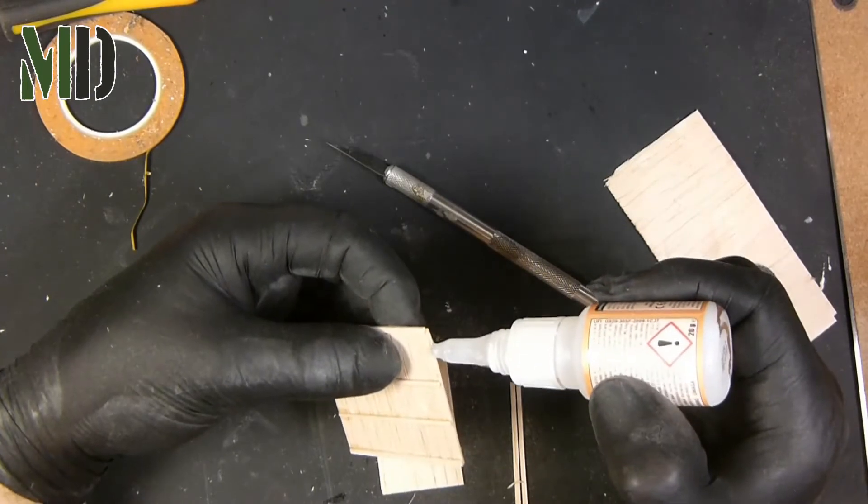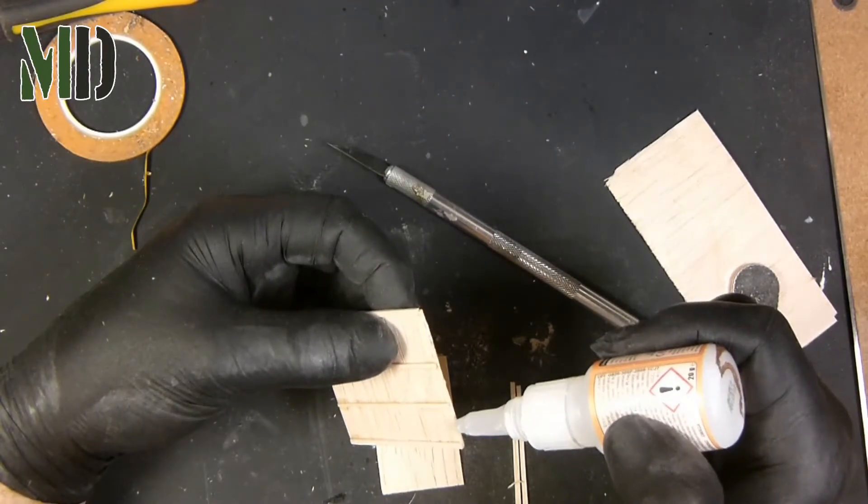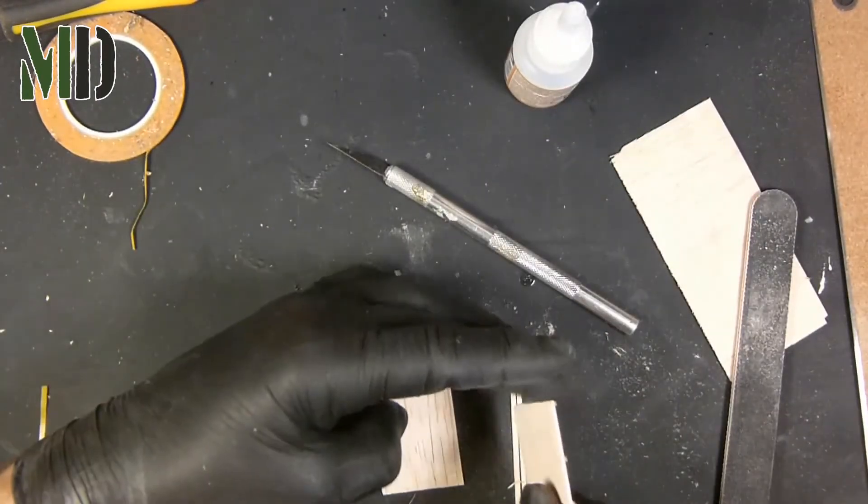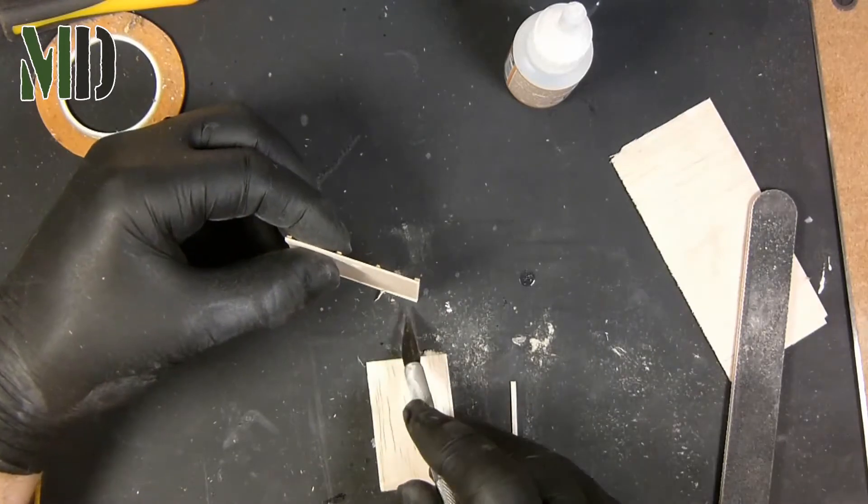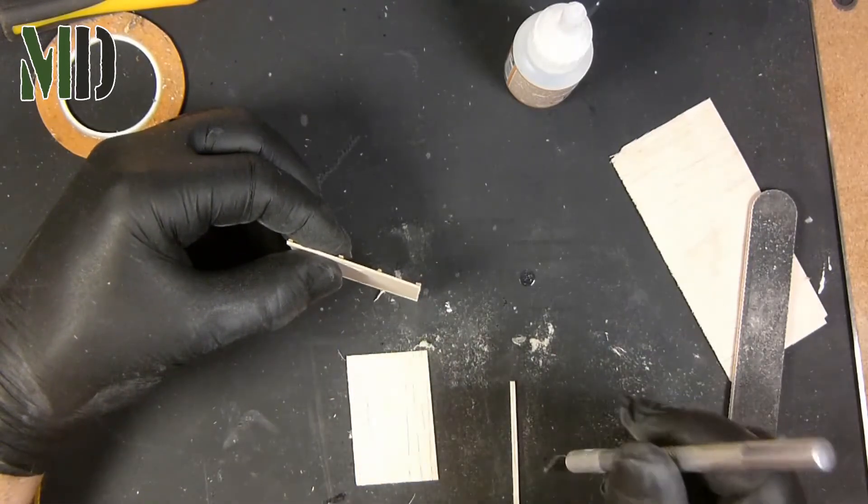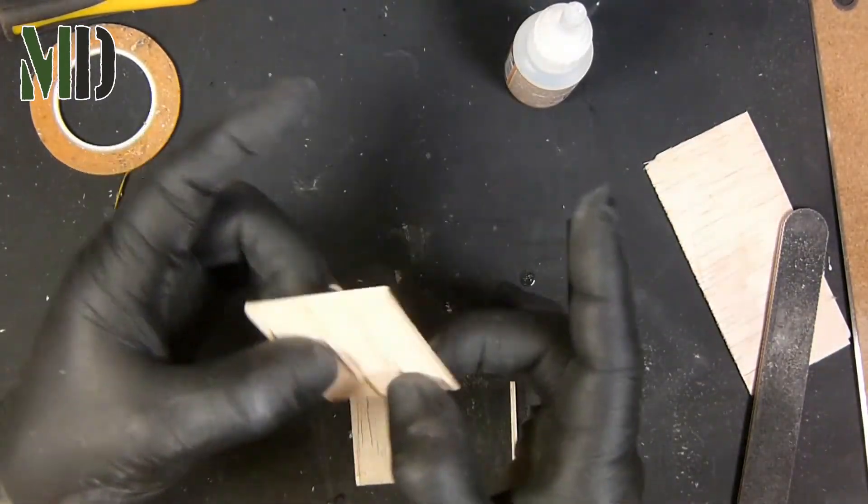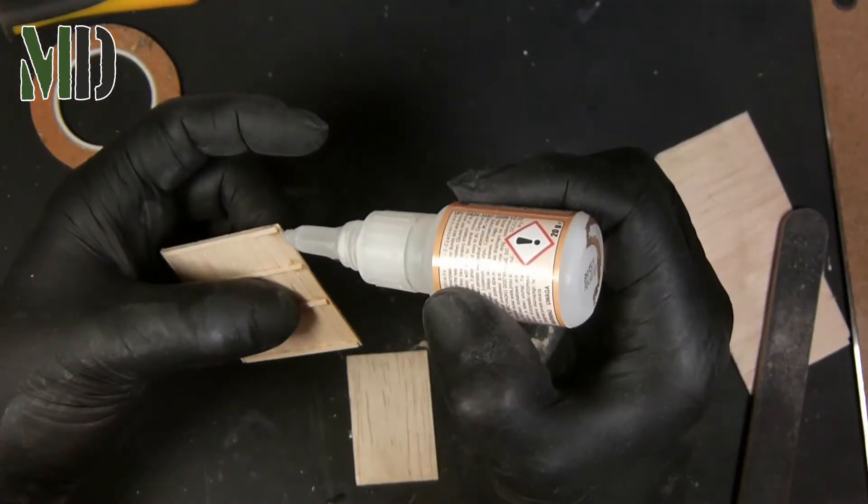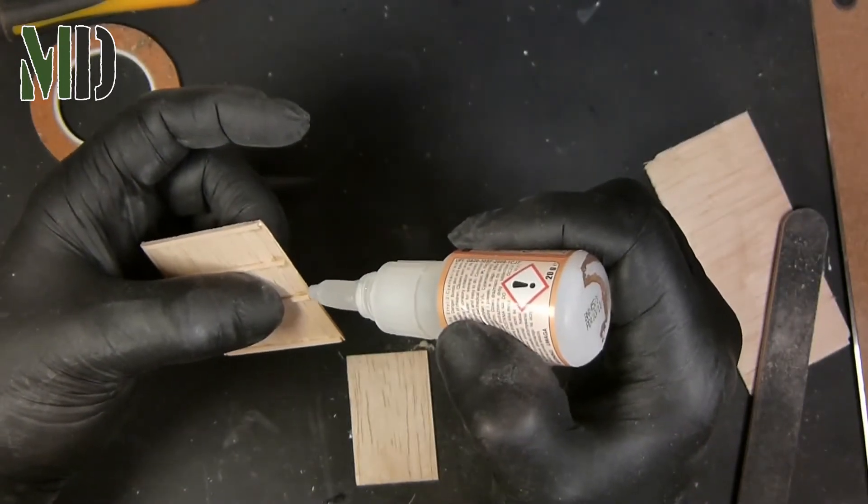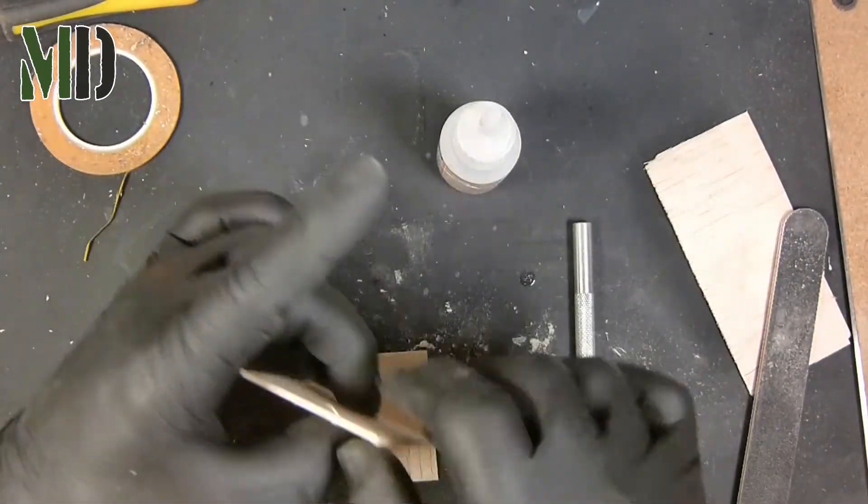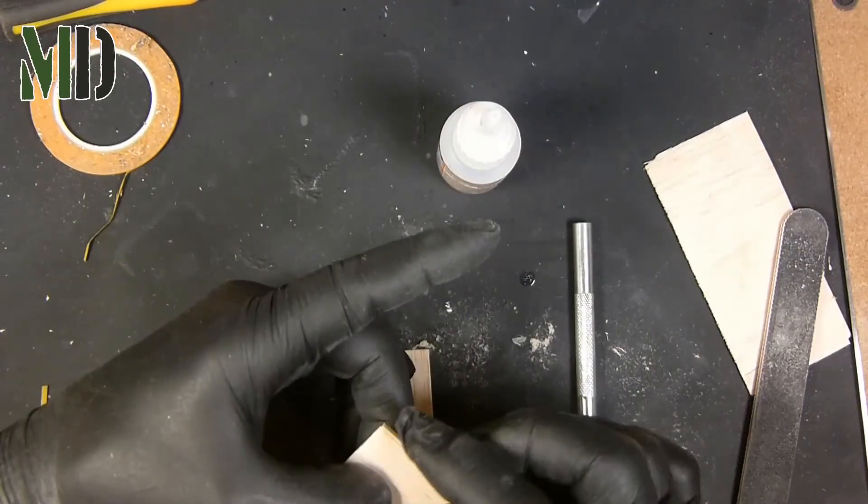Once all the cross braces are fitted, I'll do the two sides of the panel just to tidy up. And that's one fence panel complete.